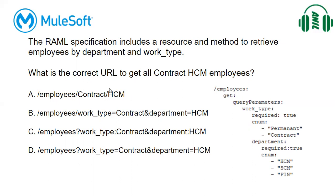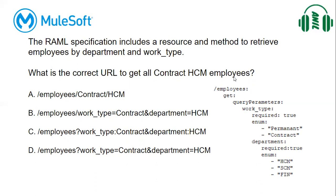Option A uses forward slash contract forward slash HCM — that's how URI parameters are sent, not query parameters. Option B uses work type=contract and department=HCM but is missing the question mark. Option C has a question mark but uses a colon instead of an equals sign. Option D uses question mark, work type=contract, and department=HCM — that is correct. So D is the correct answer.